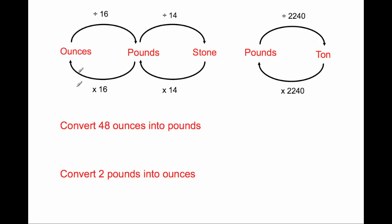It's quite useful to know the abbreviations for these units. Ounces — the abbreviation is oz. For pounds, lb. For stone, st. And for tonne, we usually just write out tonne in full. We wouldn't use a small t because we might mistake that for a metric tonne.